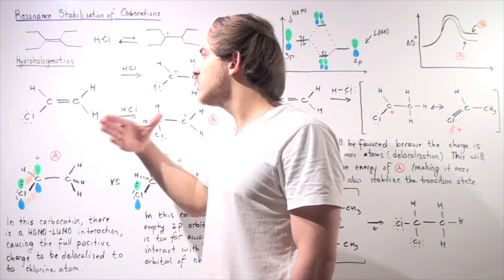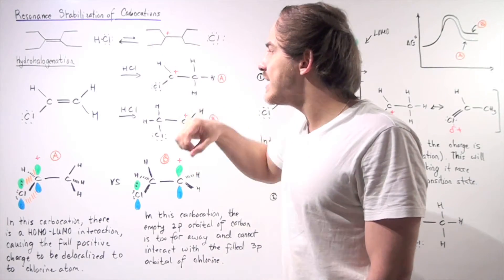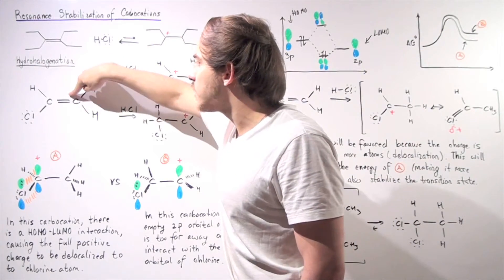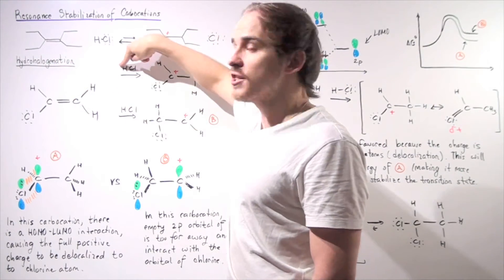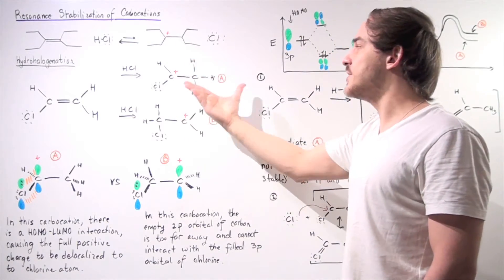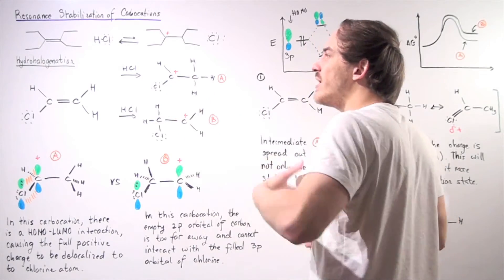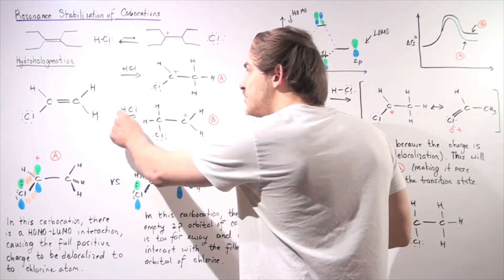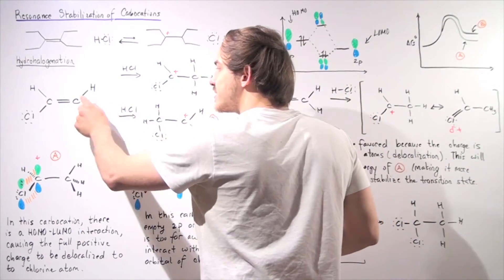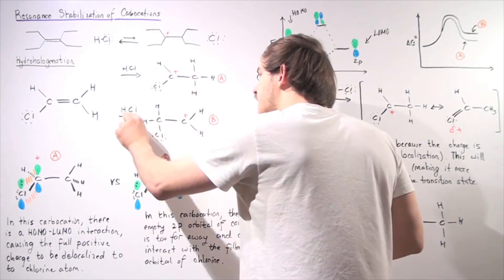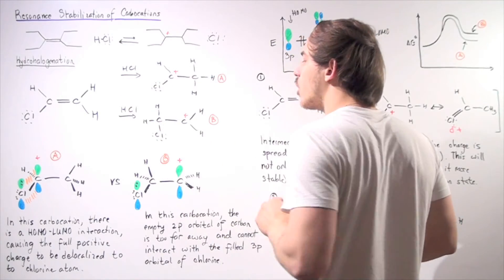Suppose our alkene undergoes hydrohalogenation and the H atom adds to this carbon. This pair of electrons in the P orbital grabs the H atom, forming a carbocation intermediate with a positive charge on this carbon. In the second case, the H atom can add onto the other carbon instead, and we have two choices — giving us a different carbocation intermediate.